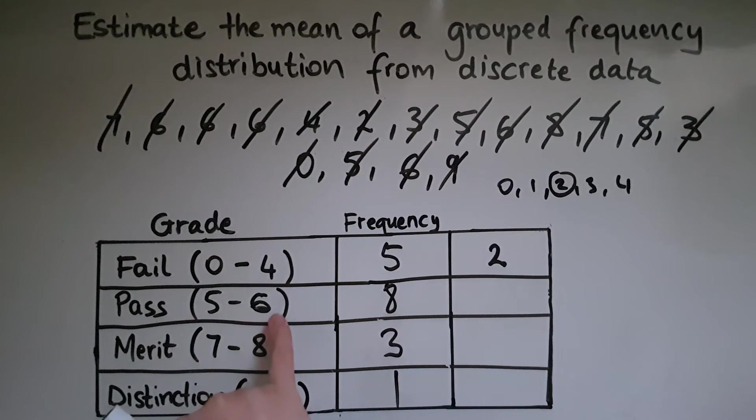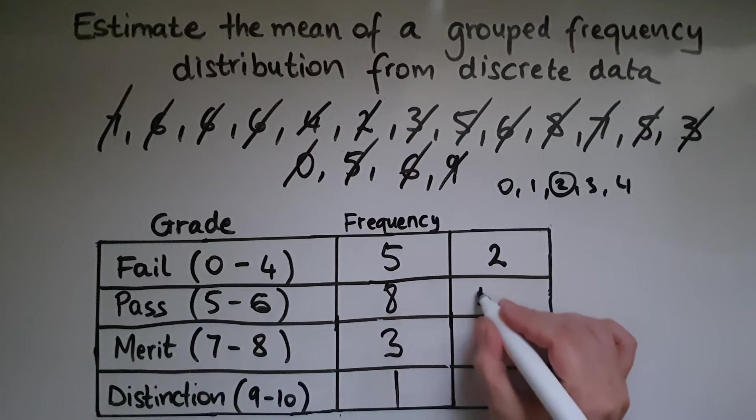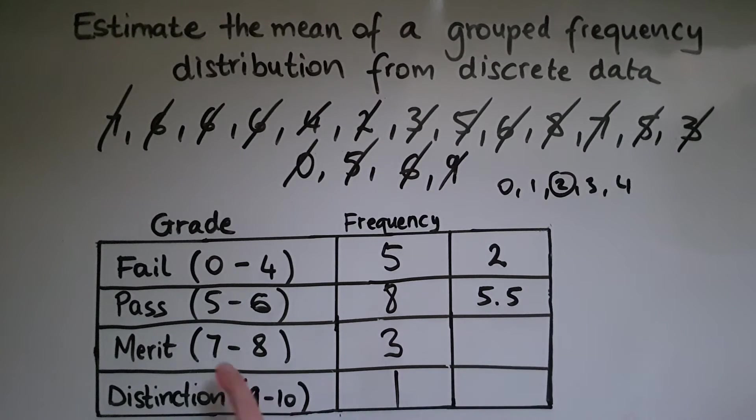And between 5 and 6, we've got only 5 and 6, so it's going to be 5.5. Between 7 and 8 is 7.5. Between 9 and 10 is 9.5.